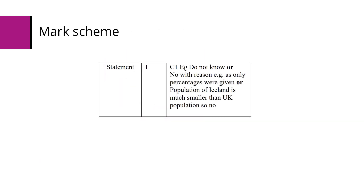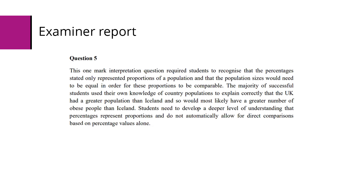The mark scheme allows two options: credit is given for stating we can't know from percentages alone, or if a student knows that Iceland's population is smaller than the UK's, they can conclude that a larger percentage of a smaller population does not necessarily mean more men are obese in Iceland. The examiner report notes many successful students used their knowledge of Iceland's smaller population, and flags that students need a deeper understanding that percentages represent proportions — comparisons are only meaningful when you know the actual population sizes.